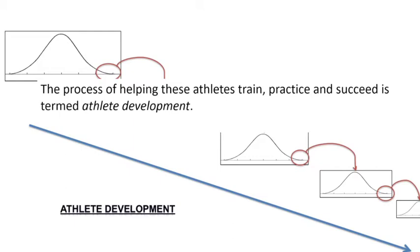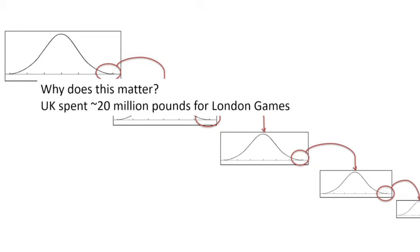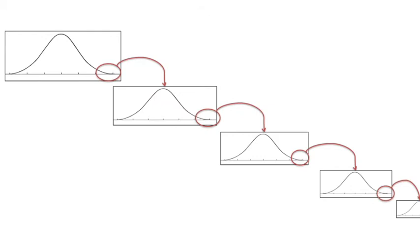Why is this important? The UK spent 20 million pounds — around 36 million Canadian dollars — not on building infrastructure or supporting athletes already in the system going into the London Games, but just on identification. That's a lot of money. We want to make sure that if we're using that kind of funding for identification strategies, we should be spending it in the right place.